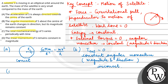Now option C: the total mechanical energy of S varies periodically with time. This is incorrect, because if we talk about work done, work done is 0, since the gravitational force is perpendicular to the motion of the satellite. So option C is incorrect.